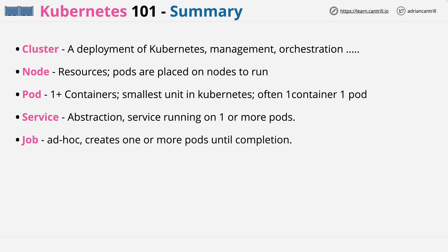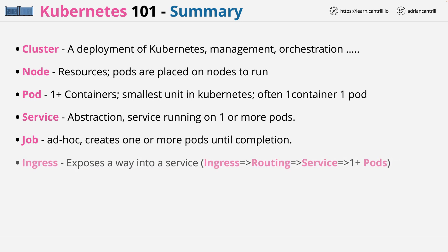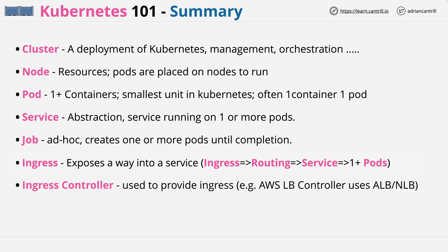A job is an ad hoc thing inside the cluster. A job creates one or more pods, runs until it completes, retries if required, and then finishes. Jobs might be used as back-end, isolated pieces of work within a cluster. Ingress is how something external to the cluster can access a service — external users come into an ingress, which is routed through the cluster to a service, and the service points at one or more pods providing the actual application. An ingress controller is a piece of software which arranges for the underlying hardware to allow ingress. For example, there is an AWS load balancer ingress controller which uses application and network load balancers to allow ingress, but there are also other controllers such as NGINX for various cloud platforms.